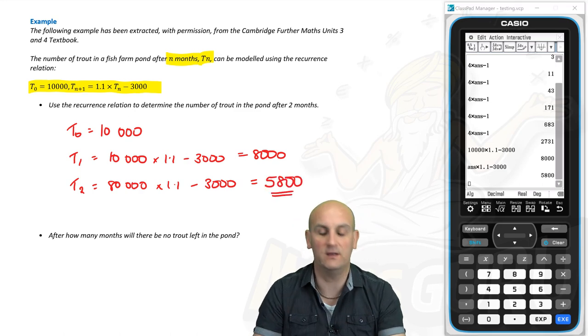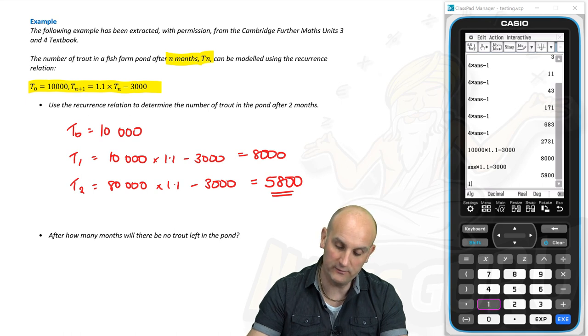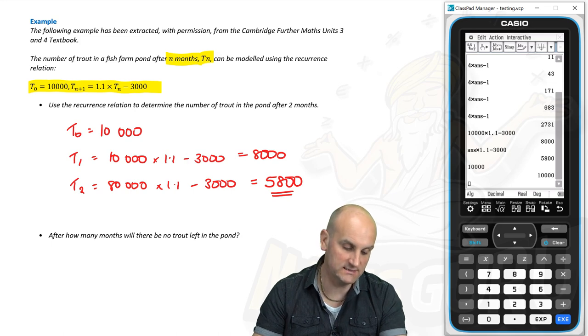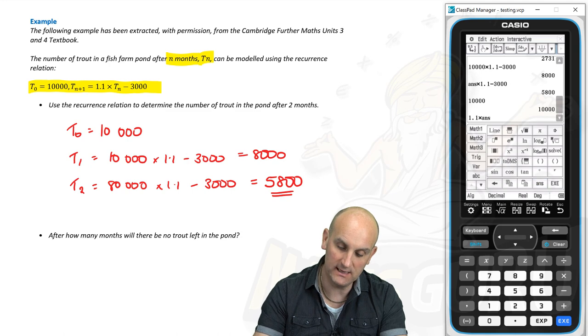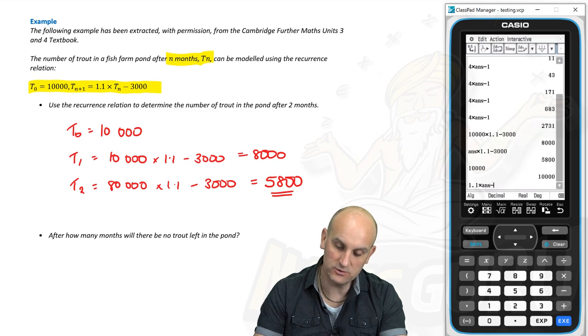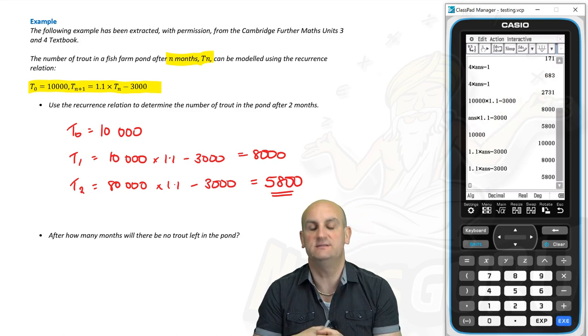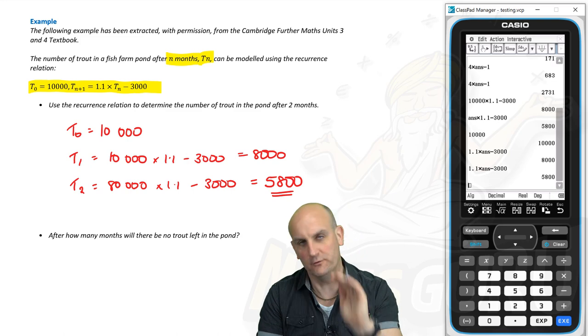Now again, I could have done that in my calculator relatively quickly. I could have put 10,000 in as my start value, and then I just put in my formula, which if you remember is going to be 1.1 multiplied by my previous value, which is ANS, and then I'm going to subtract from that 3,000. So there is the end of the first month, and there is the end of the second month, and we get the same values, which is always good.